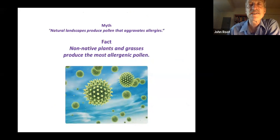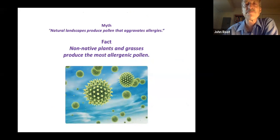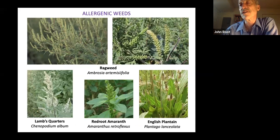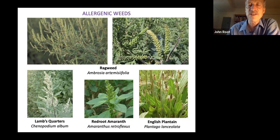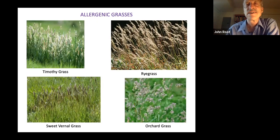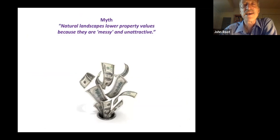Goldenrod is often unfairly blamed, but goldenrod is not allergenic — it does not have wind-borne pollen. Pollinators actually pick up the pollen from the flowers and deliver it to another goldenrod plant. It's the wind-borne pollen from allergenic weeds like ragweed, lamb's quarters, red-root amaranth, English plantain, and some non-native grasses that are problematic — but not the plants that you're likely to establish. As for property values, it certainly is not necessary for a property to be messy and unattractive.